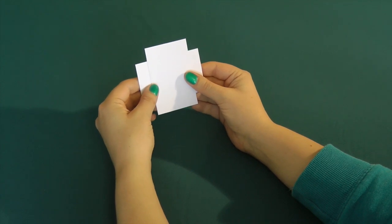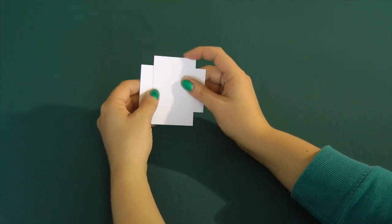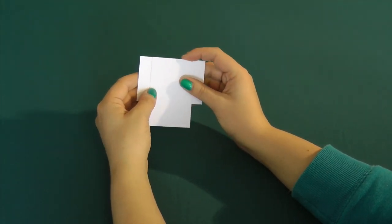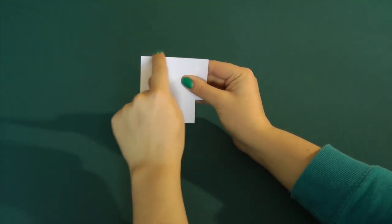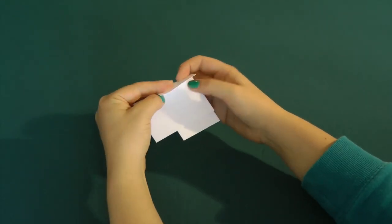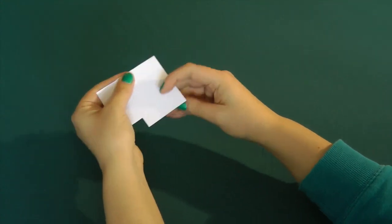If you place two cards at right angles like this, an easy way to make sure they're at right angles is to line up these edges like so, and then you can see that these folds will be perpendicular.